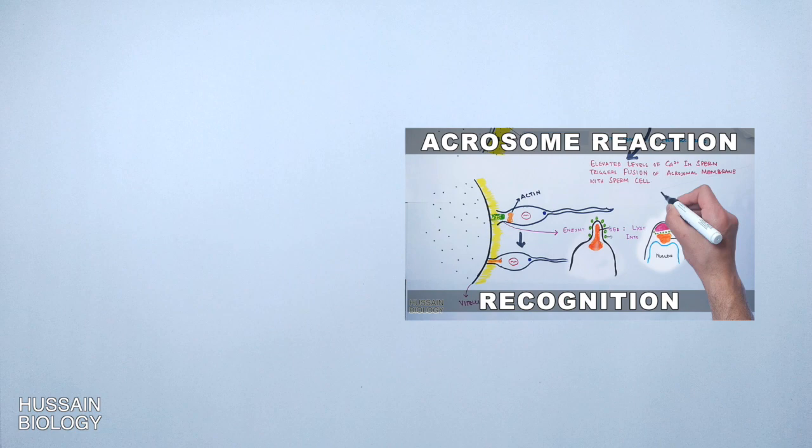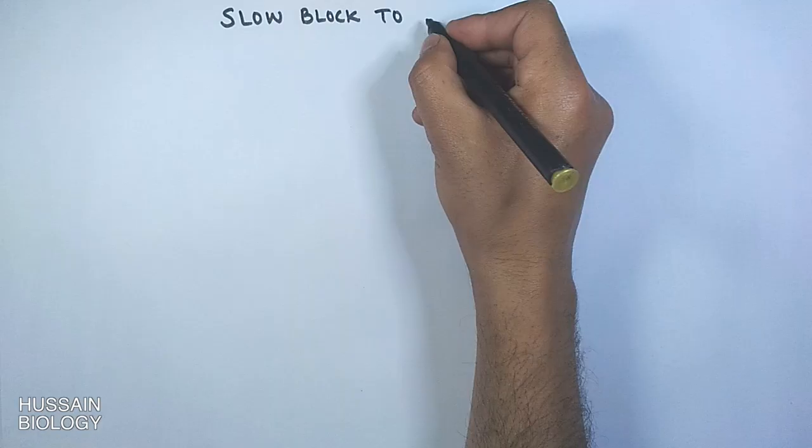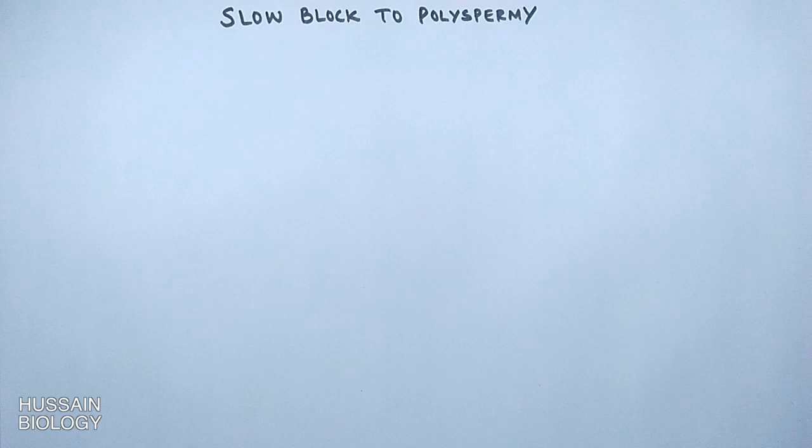In this series of videos we have been discussing about the fertilization process in sea urchins. In this video we will be discussing about the slow blocks to polyspermy, which includes the cortical granule reaction.